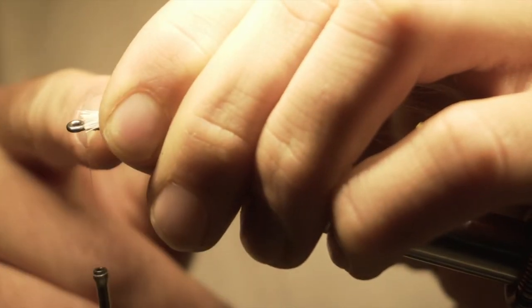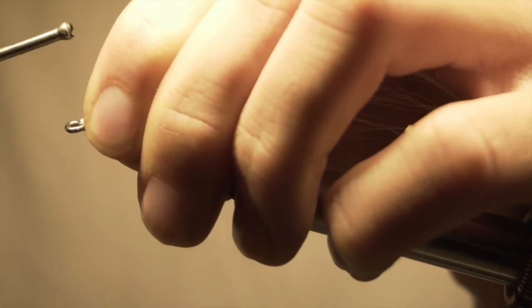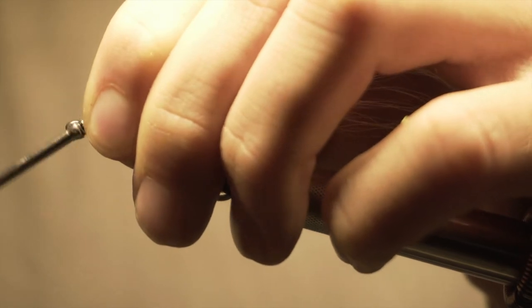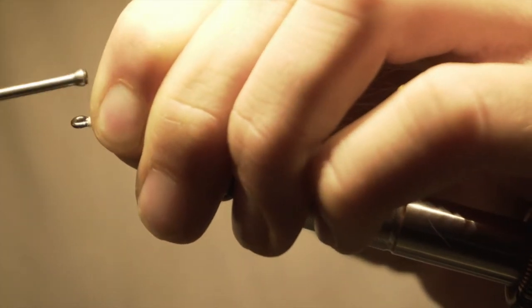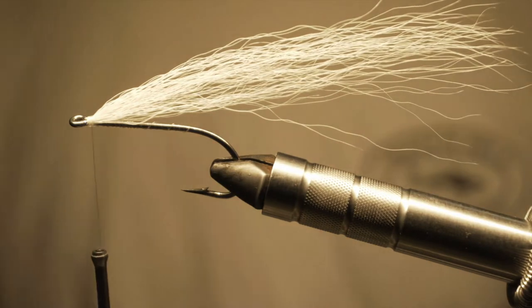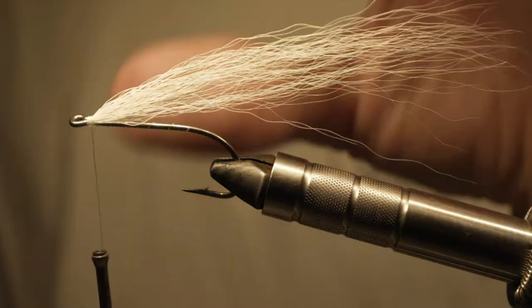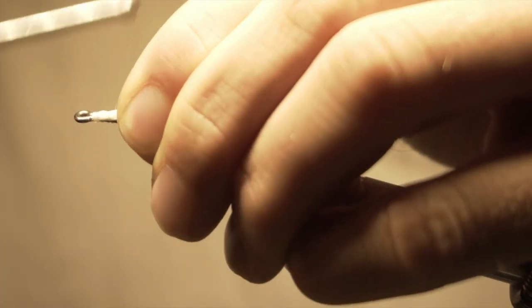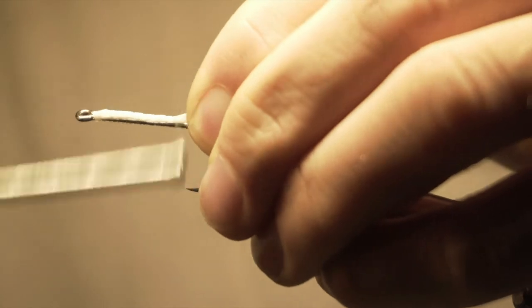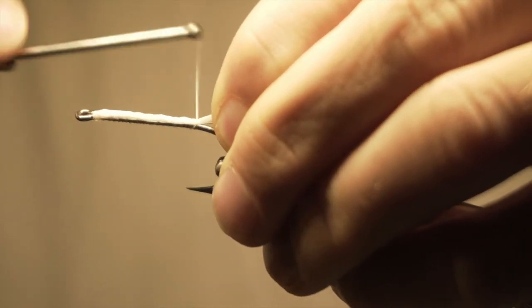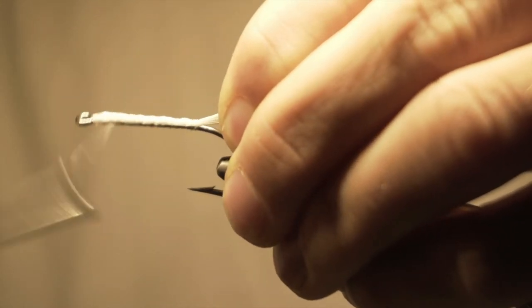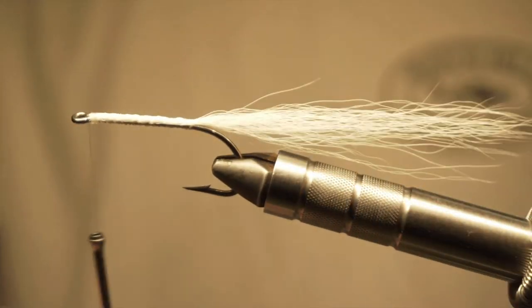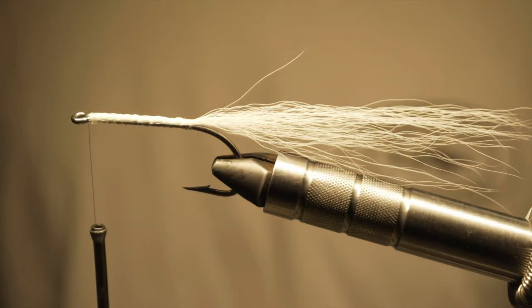We're going to start out just doing a couple of loose wraps right up at the head here, just behind the eye, and then tension down until you've got them all captured. I go with my free hand and pinch those materials down on top of the hook shank, and then I just wrap them all along the length of the hook shank.